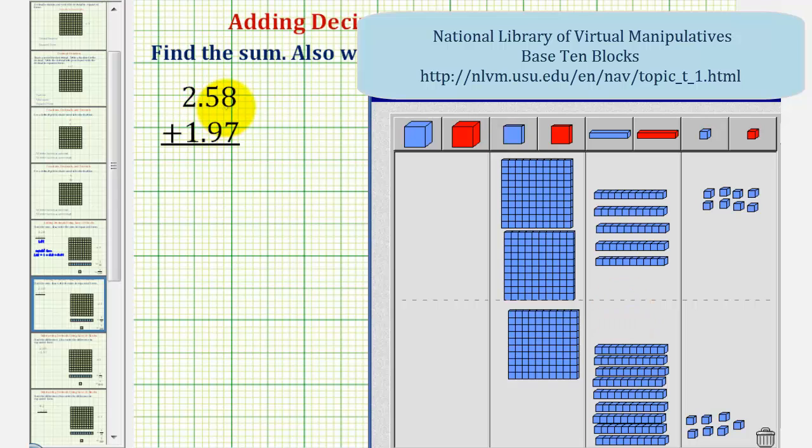So for two and fifty-eight hundredths, we have two flats for two wholes, five longs for five-tenths, and eight bits for eight-hundredths.